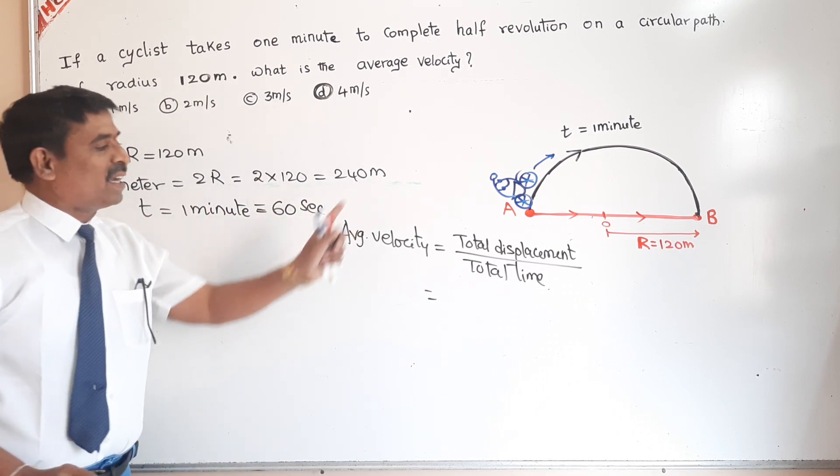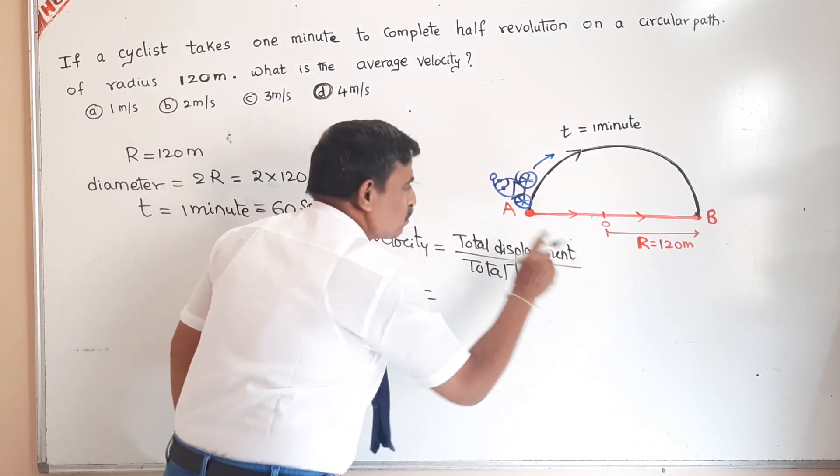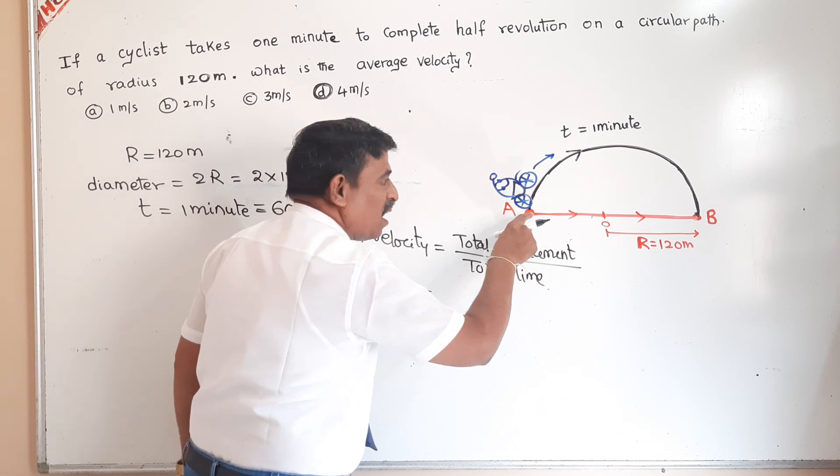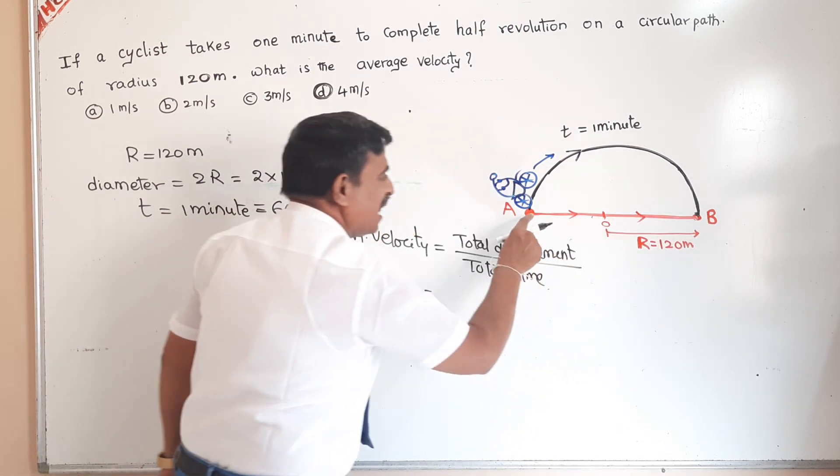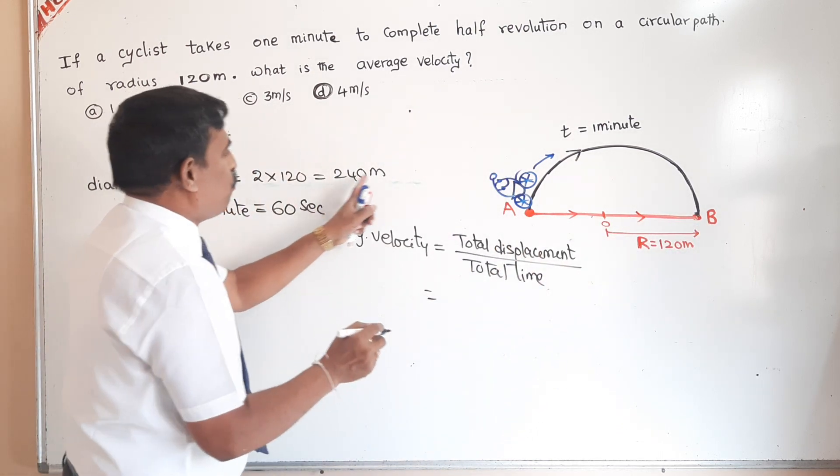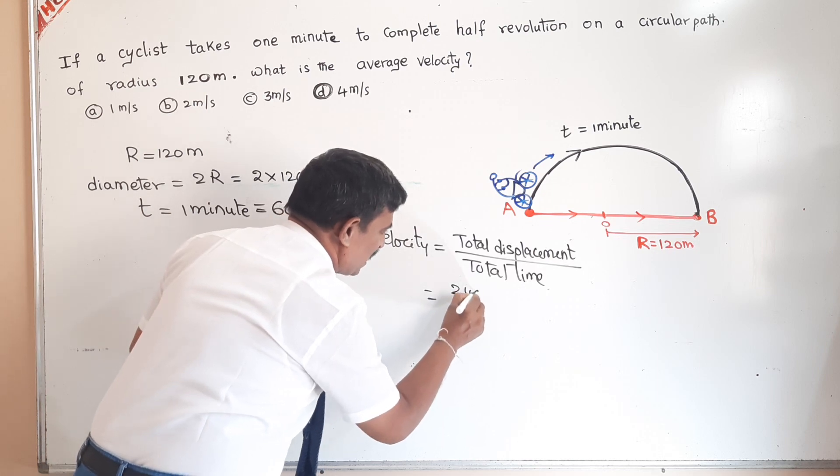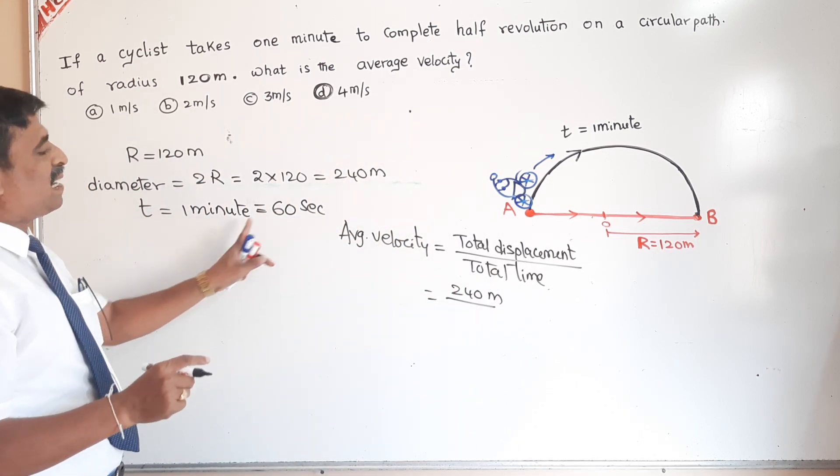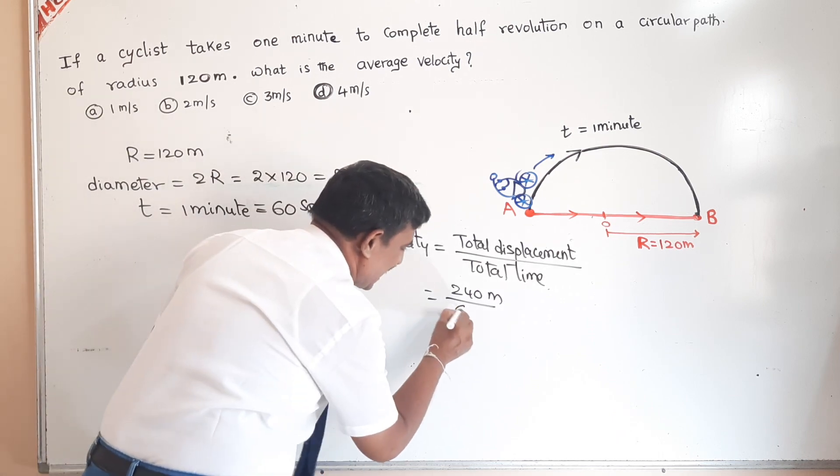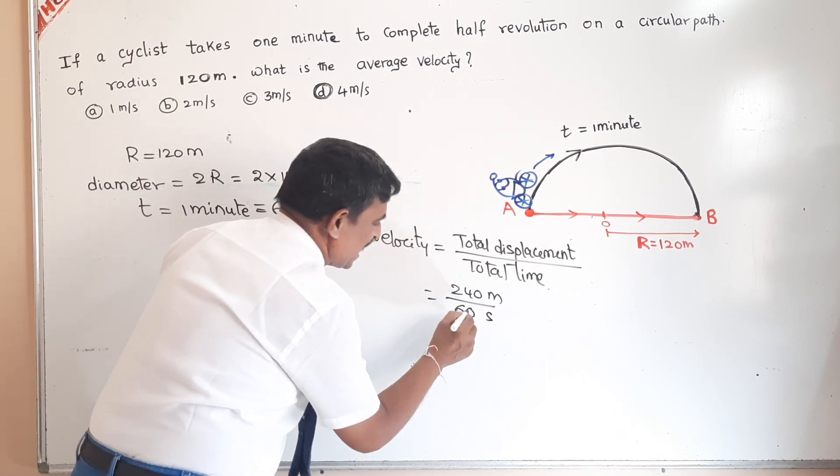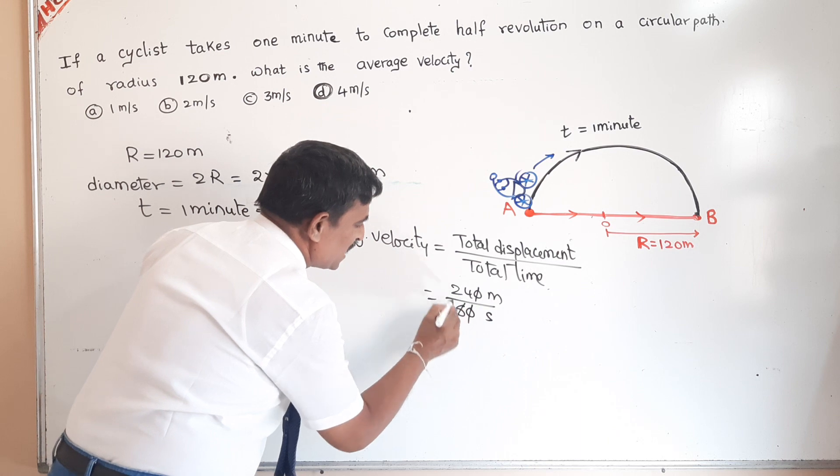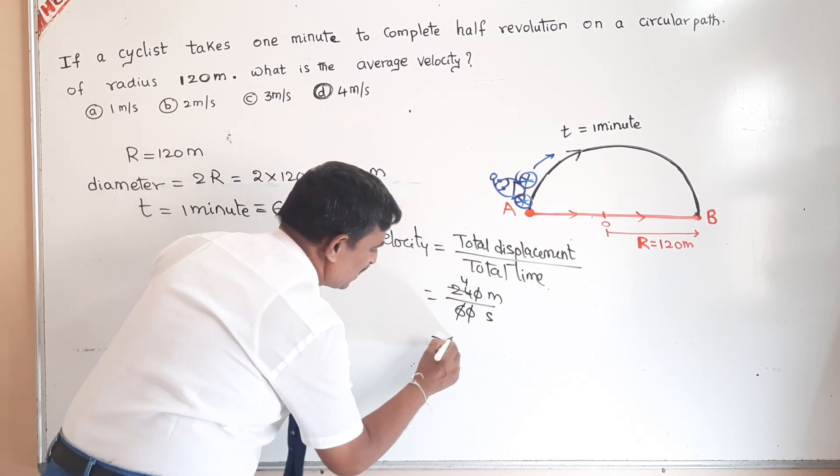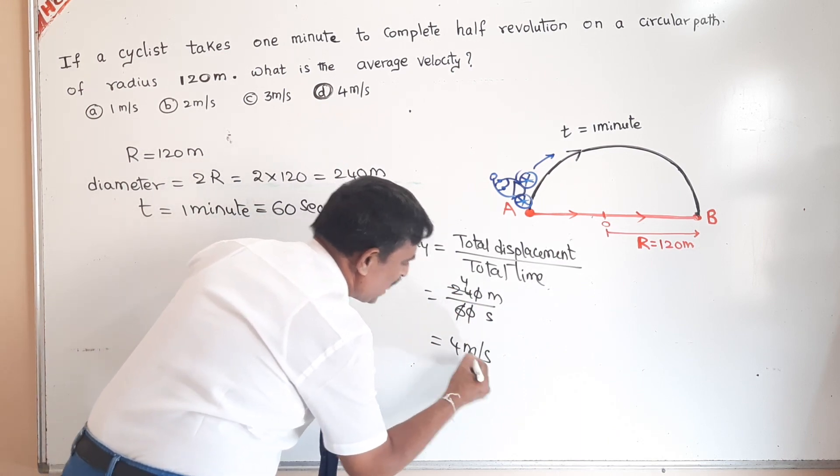Total displacement is nothing but length of A-O-B, that is diameter, 240 meter. Total time is 1 minute, nothing but 60 seconds. Dividing 240 by 60 gives us 4 meter per second.